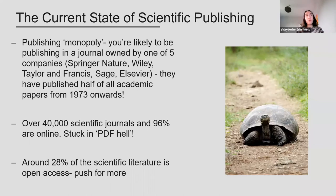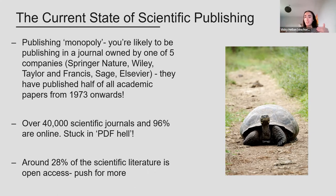So what does the landscape of journals currently look like? Mainly due to commercialisation in the 1950s, there is what many refer to as a publishing monopoly — you're likely to be publishing in a journal owned by just one of five companies, and they've published half of all academic papers from 1973 onwards. A 2012 estimate puts there being around 40,000 scientific journals, the majority now online. Despite that, there hasn't been a lot of innovation in terms of how journal articles are presented over that 350-year period — the majority still have a very traditional format, presented as a PDF.